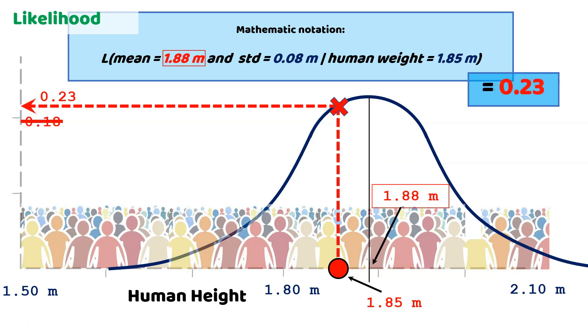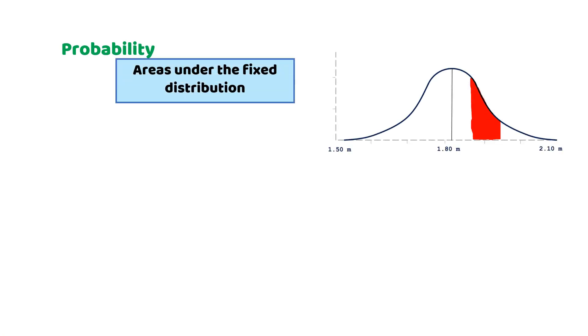So, with likelihoods, the measurements on the right side are fixed and we modify the shape and location of the distribution on the left side. In summary, probabilities are the areas under a fixed distribution. Mathematically, we have the probability of data given a distribution.